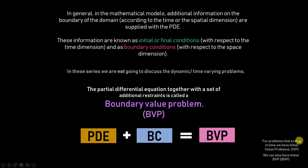For completeness, we can similarly define initial value problems if we also consider time as an independent variable. Independent variables are simply the variables on which your state variable depends — for example, if you are solving for displacement in some domain, the displacement varies from location to location as x, y, z, which are the independent spatial variables. If displacement also varies with time, then time is also an independent variable and the problem becomes an initial boundary value problem. But in this series we are only going to talk about boundary value problems with no time involved.